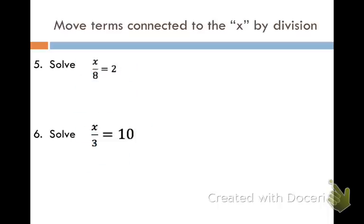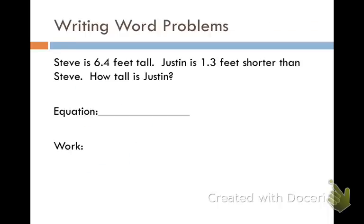So here we have a word problem. Steve is six point four feet tall. Justin is one point three feet shorter than Steve. How tall is Justin? So we're trying to figure out how tall Justin is. I'm going to use x to determine, or to write Justin's height. So right now we'll say Justin is x feet tall. Justin is one point three feet shorter than Steve. So if we take Justin's height and we add one point three, that's the same thing as Steve's height. So Justin plus one point three feet equals Steve's height.